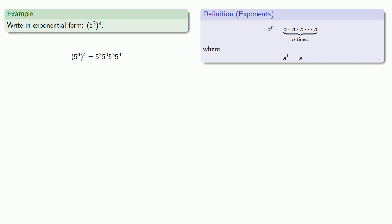And remember that the exponent tells us how many copies of the base. So here I have 3 copies of 5, 3 more copies of 5, 3 more copies of 5, and finally, 3 more copies of 5.